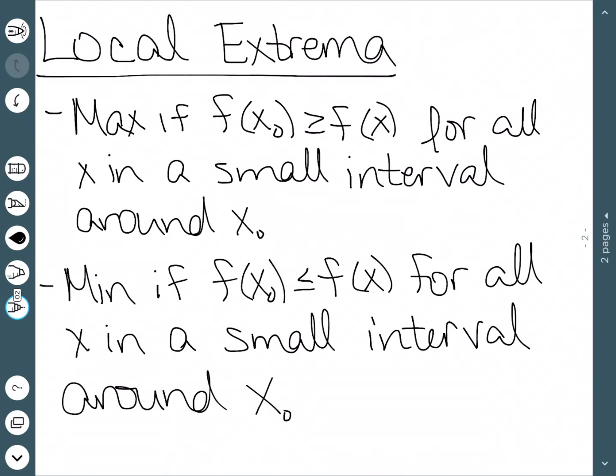Similarly, we can have a local minimum if f(x₀) ≤ f(x) for all values of x in a small interval around x₀. So these are no longer the absolute maximum or minimum of the graph, but they are a maximum or minimum in a small area of the graph.